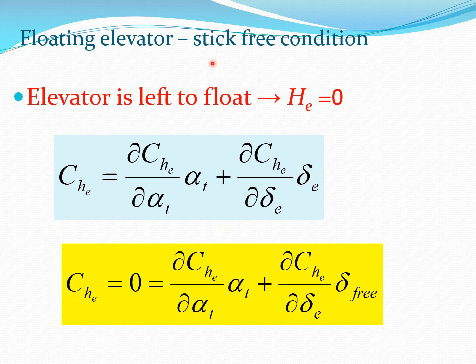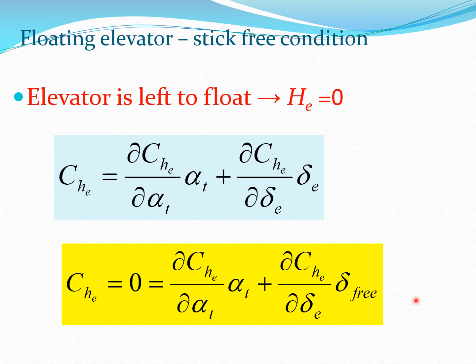Now let us consider the stick-free condition. The stick-free condition essentially means that the elevator is left to float freely. If you leave it free, the hinge moment becomes zero and the elevator settles in space at some location where H_e equals zero. Starting from the Ch_e formula in terms of alpha_t and delta_e, we set it equal to zero — shown in the yellow box — and because it is zero, we set delta_e equal to delta_free, which is the angle the elevator makes when the hinge moment is zero, corresponding to the stick-free condition.